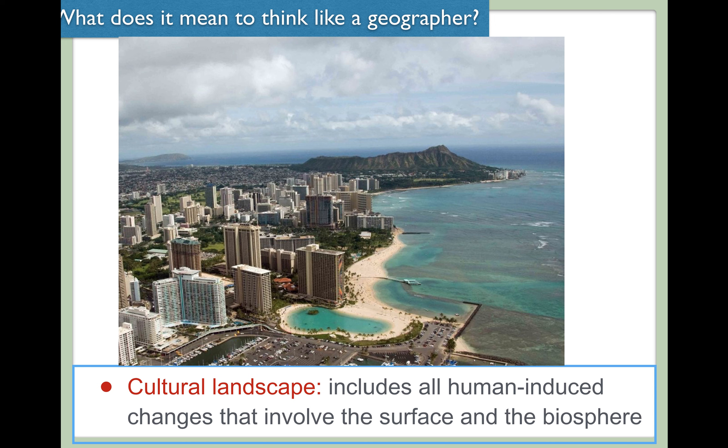The cultural landscape is a term that means all human-induced changes that involve the surface and the biosphere — the surface of the earth being what we live on, and the biosphere being the area that surrounds the surface of the earth. When we focus on the cultural landscape, picture looking out your window at the area around you. The natural world refers to what naturally exists, while the cultural landscape is concerned with any man-made, any human change that is present on the landscape.